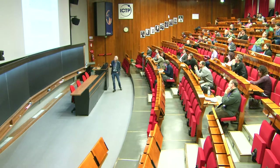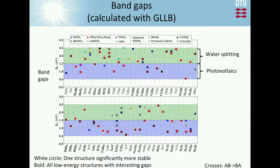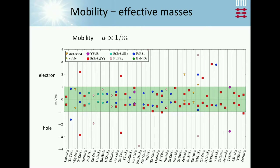We then calculate the band gaps for the different materials, using a green window relevant for water splitting around 2 eV, and also collect materials potentially relevant for photovoltaics with a band gap around 1 eV. We calculate band gaps with GLLB, which includes the derivative discontinuity and gives a much better estimate than standard PBE DFT. We also address mobility by calculating effective masses — not a complete description, but better than nothing — focusing on materials where both electron and hole masses are below one electron mass.